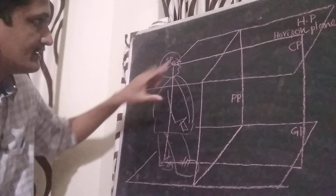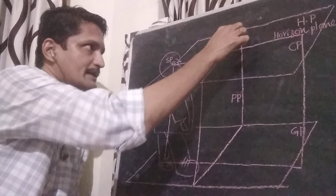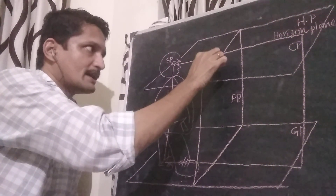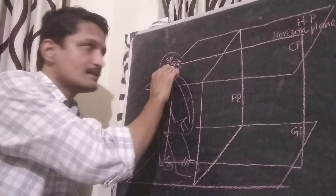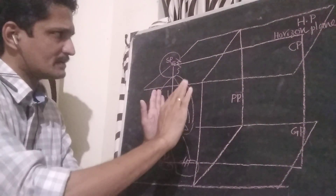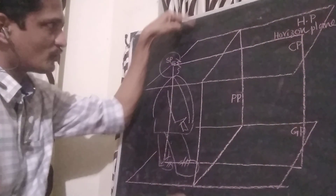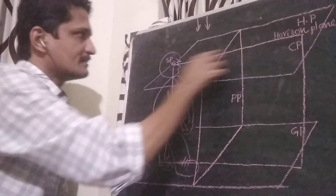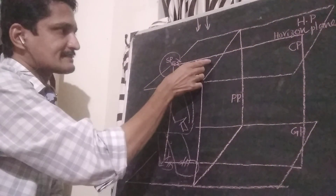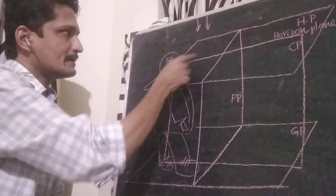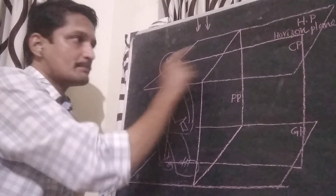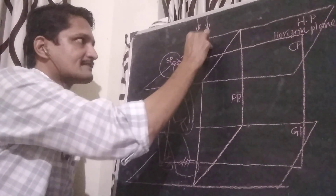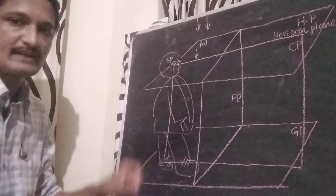The picture plane is perpendicular to that line, and that line must be passing through the station point. The top view of CP — exactly perpendicular to CP and the line passing through SP — this line is known as the axis of vision. This point is known as center of vision, CV.